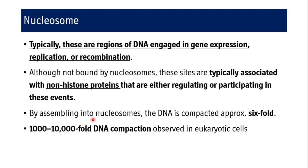By assembling into nucleosomes, the DNA is compacted approximately six-fold. So at the level of the nucleosome, there is six-fold compaction. The average eukaryotic cell shows 1,000 to 10,000 fold DNA compaction overall — a highly condensed DNA molecule.